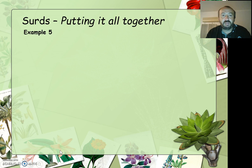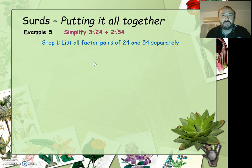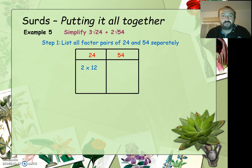Just moving on — another example, Example 5. We're going to simplify that one. Once again, we've got 2 surds which look like we're not going to be able to do anything with. But remember, both of these are non-prime numbers, so they've got factors and we can simplify those expressions. We're going to have a look at the factor pairs of 24 and 54 separately. The biggest square for 24 is going to be 4, and the biggest square for 54 is going to be 9.